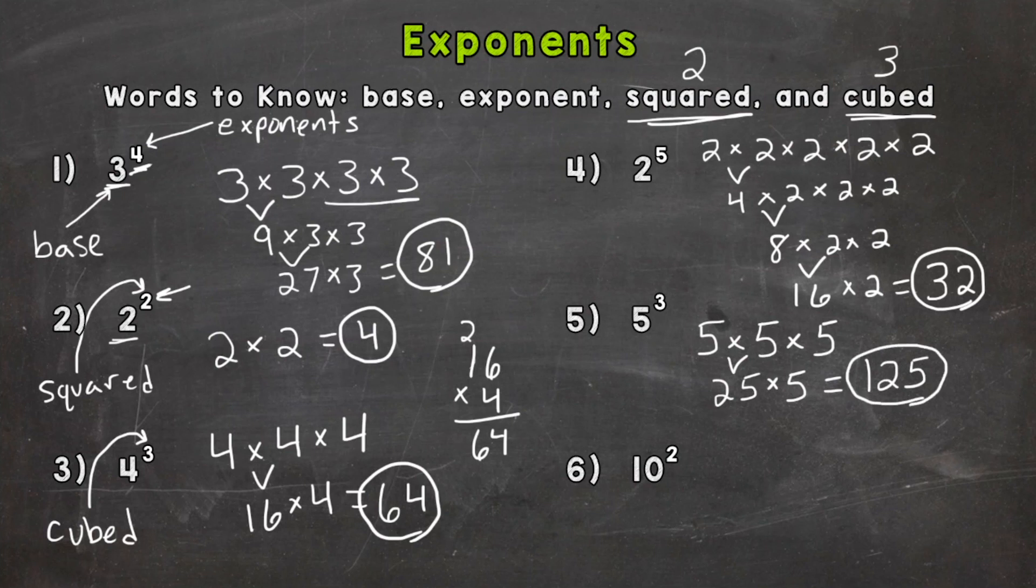And number six, we have 10 to the second power or 10 squared or 10 to the power of two. Now, I want to mention a common mistake here is when people see exponents, they'll just do 10 times two and say this equals 20. Remember, this doesn't mean 10 times two. You expand the 10 out two times. So it actually means 10 times 10, which equals 100.